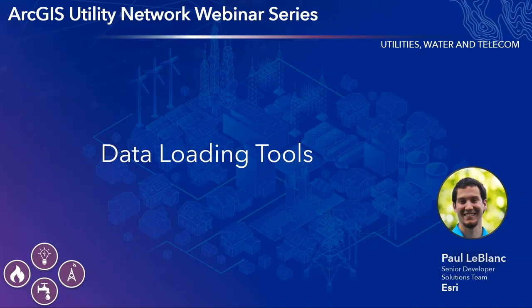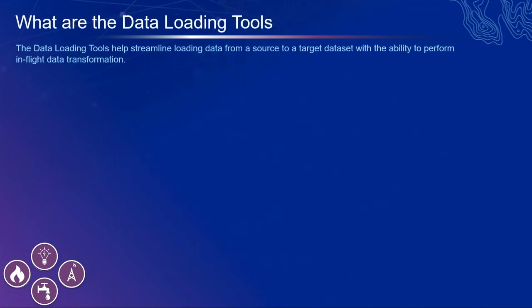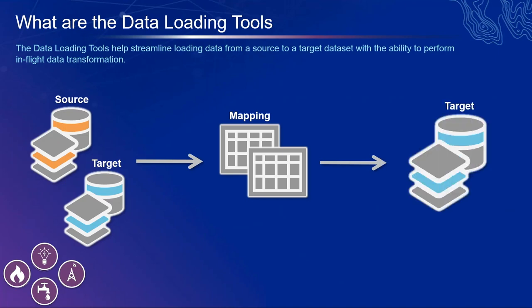The Data Loading Tools extend the core Append geoprocessing tool by allowing in-flight data transformation, powered by calculated fields and Python expressions. You can perform ad hoc ETL or, for more complex transformations, create mapping workbooks that allow you to specify your transformation in a series of Excel workbooks. These mapping workbooks are key for the migration process because they provide a self-documenting workflow that is easily repeatable — important because data migration is usually an iterative process. We might load a subset of data into the utility network, enable the network topology, analyze errors, tweak the mapping workbooks, and reload the data, all in a few clicks.